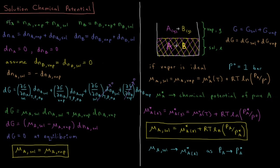The number of moles of A equals the number of moles of A in the vapor plus the number of moles of A in solution. The same holds for B. So the total change dN_A equals dN_A(vapor) plus dN_A(sol), and similarly dN_B equals dN_B(vapor) plus dN_B(sol).